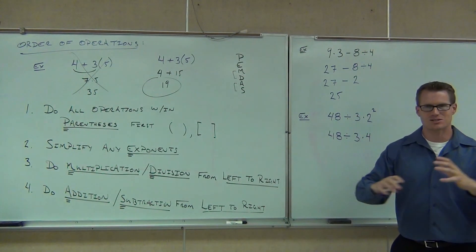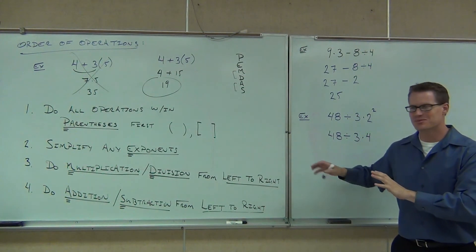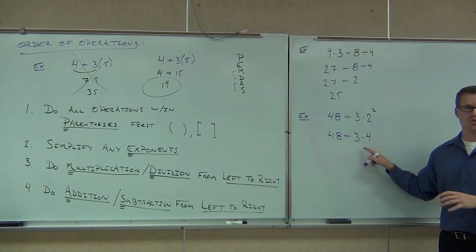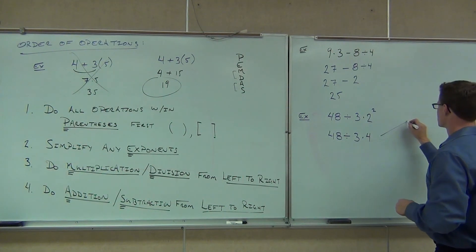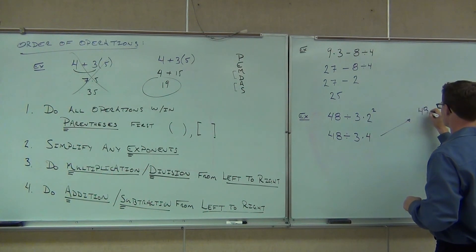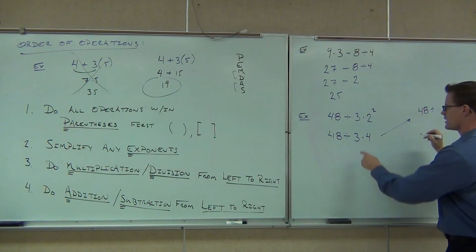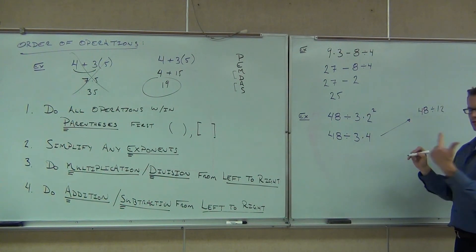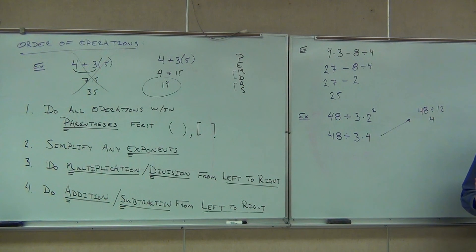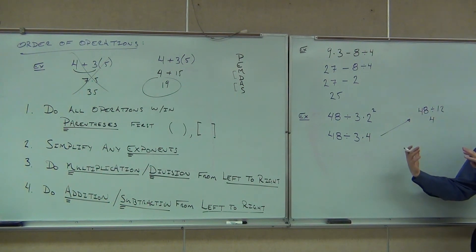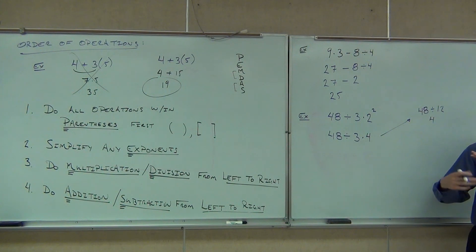What's tricky about these problems is that if you multiply first, you still get a whole number answer — 48 divided by 12 equals 4 — and you'll think you got it right. But this is the incorrect way to do the problem. You have to go from left to right. Are you all clear on this? You have to go from left to right.